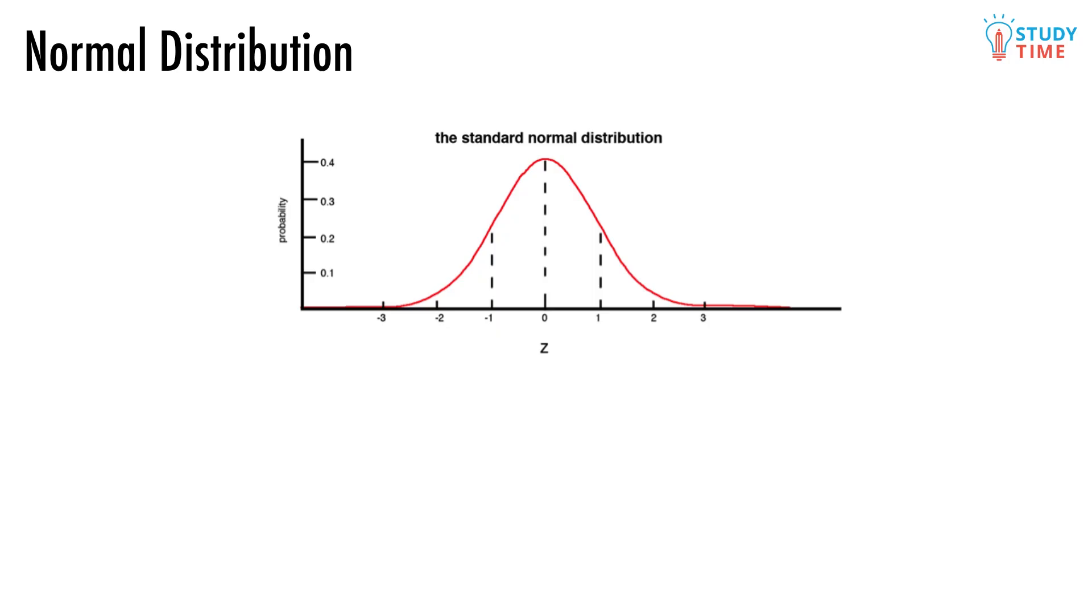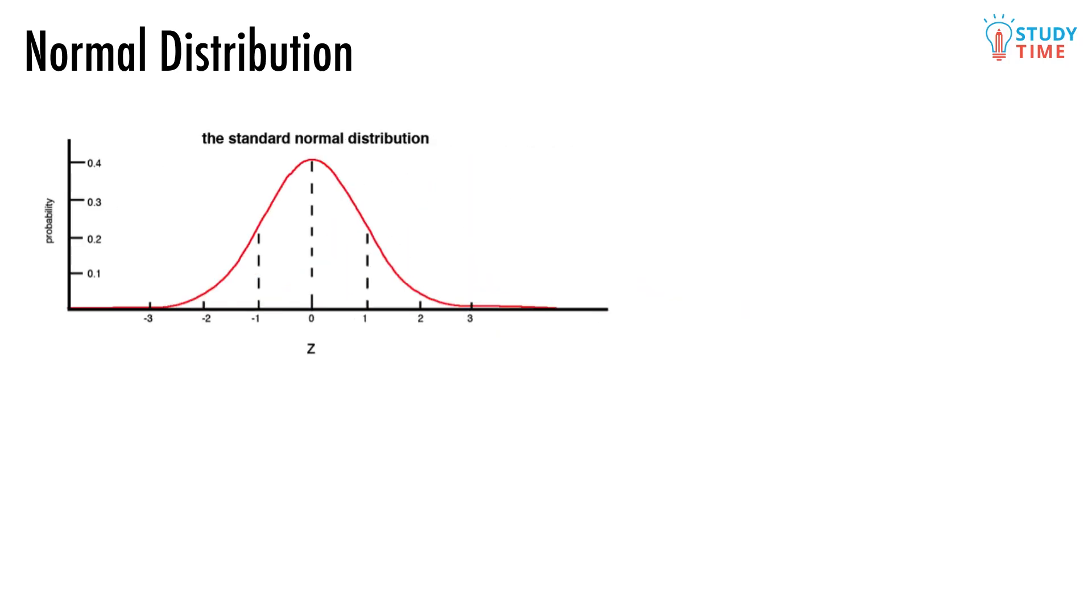It's important for this exam that you can make calculations using the standard normal distribution. The most common kind of questions are going to ask you to find probabilities on the graph. A typical question would look exactly like this. The P here means find the probability that. So what exactly are we finding the probability of? The answer's in the brackets. What we need to do is find the probability that some random variable, Z, is between 0 and 1.8 on the graph.